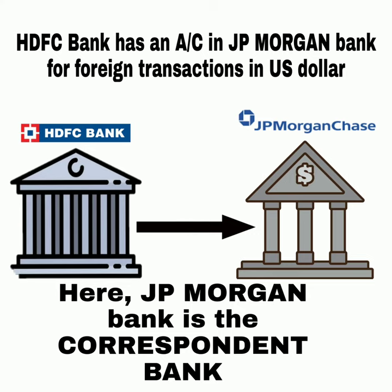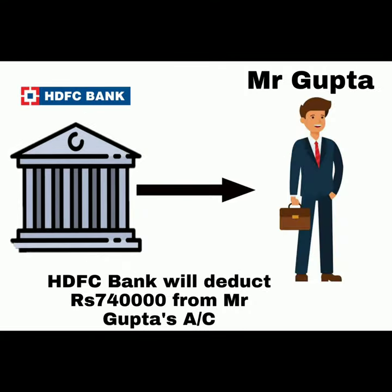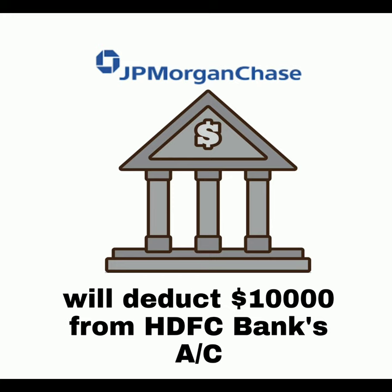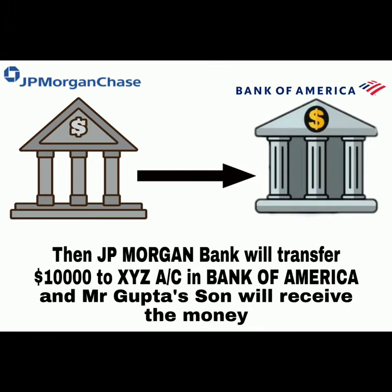Suppose HDFC Bank maintains funds in US dollars with JPMorgan Chase Bank in New York. In simple terms, it means that HDFC Bank has an account with JPMorgan in terms of dollars. So first, HDFC Bank will deduct Rs. 7,40,000 from Mr. Gupta's account. Then it will order JPMorgan Chase Bank to make a payment of $10,000 into the XYZ account of Bank of America by deducting the appropriate amount from the dollar account of HDFC maintained with them.